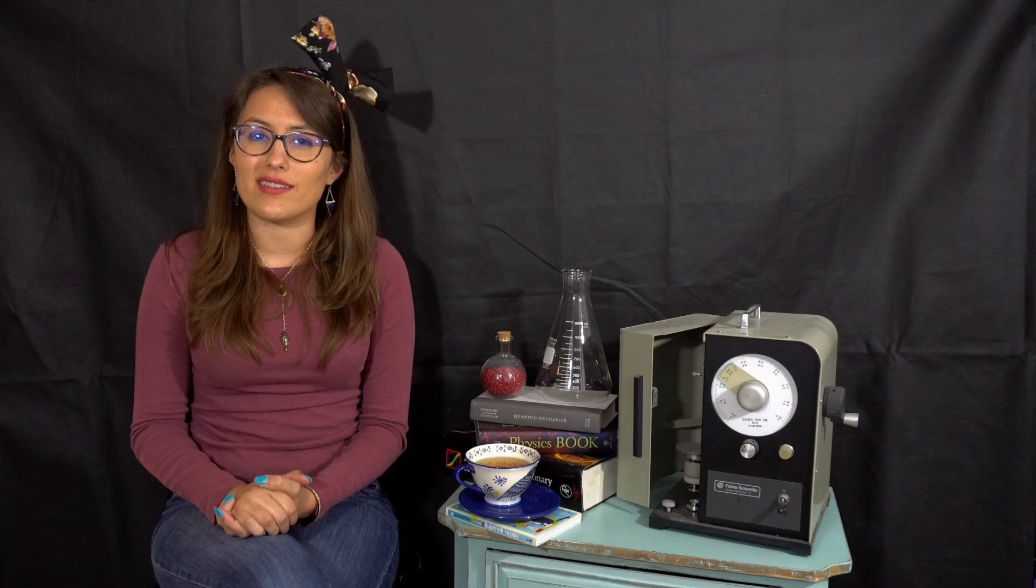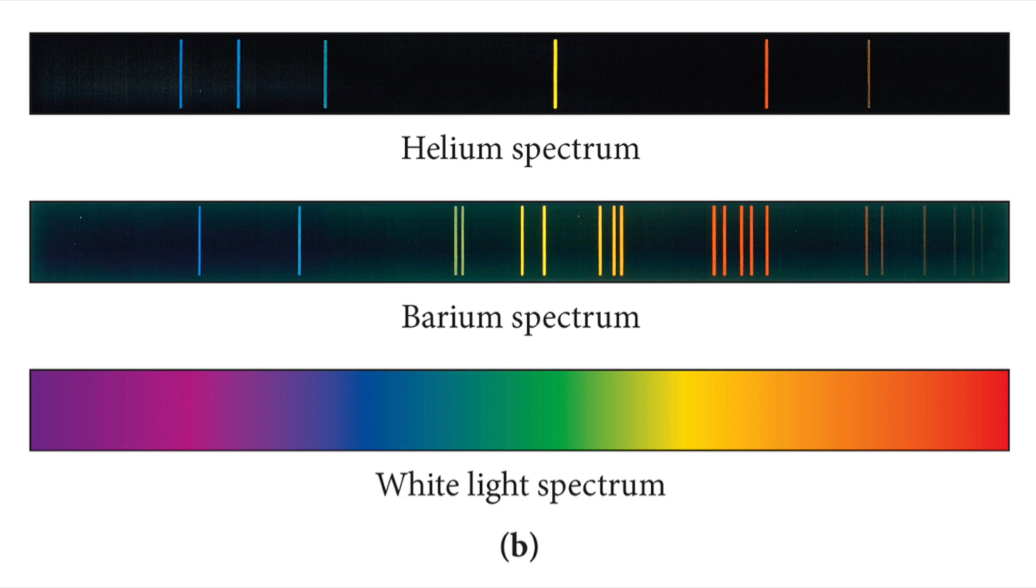This brings us back to quantum mechanics, which was able to explain these spectrums when classical physics could not. As you can notice, these spectrums are not continuous like in the case of white light. Instead, there are black lines at specific wavelengths and darkness in between.